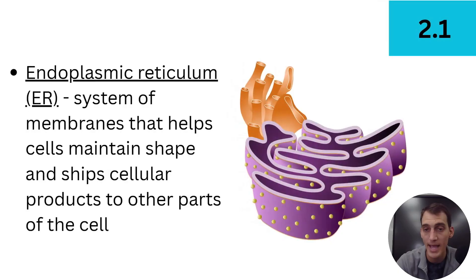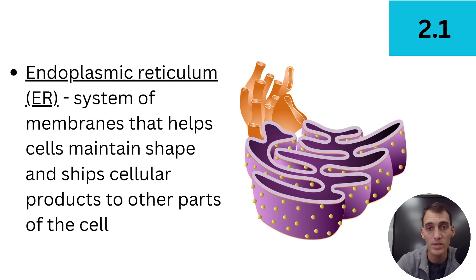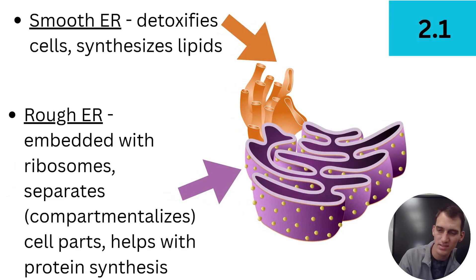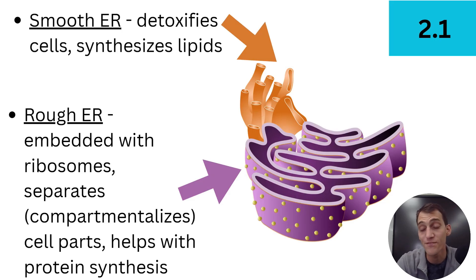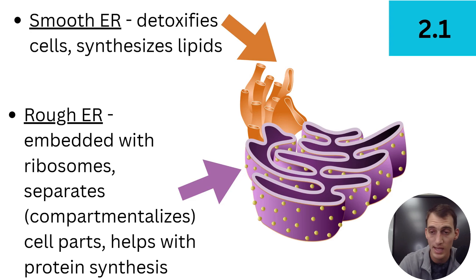Let's start with the endoplasmic reticulum, or ER. 'Endo' means within, 'plasmic' means within the cytoplasm, and 'reticulum' refers to a complex system. It is a system of membranes that helps cells maintain shape and ships cellular products to other parts of the cell. The smooth ER — pictured as tubes — is responsible for detoxifying the cell, breaking down toxic substances, and synthesizing lipids. If a cell needs to produce lipids for its membrane or sterols, that's done in the smooth ER, which then sends those lipids where they need to go.